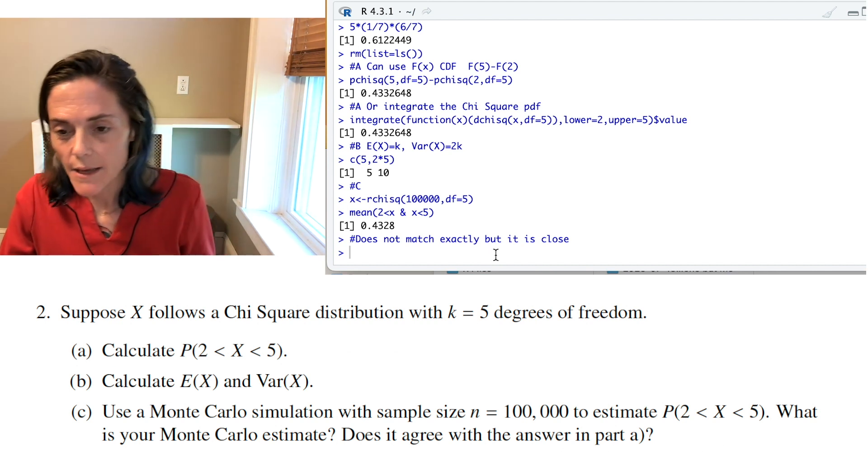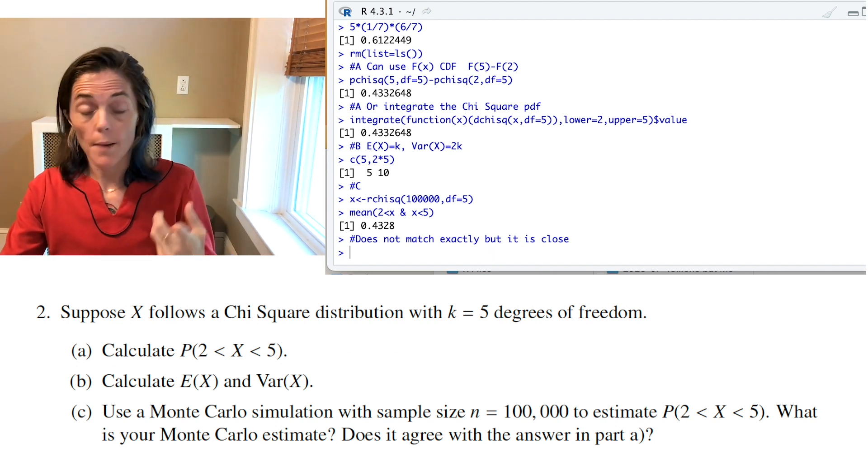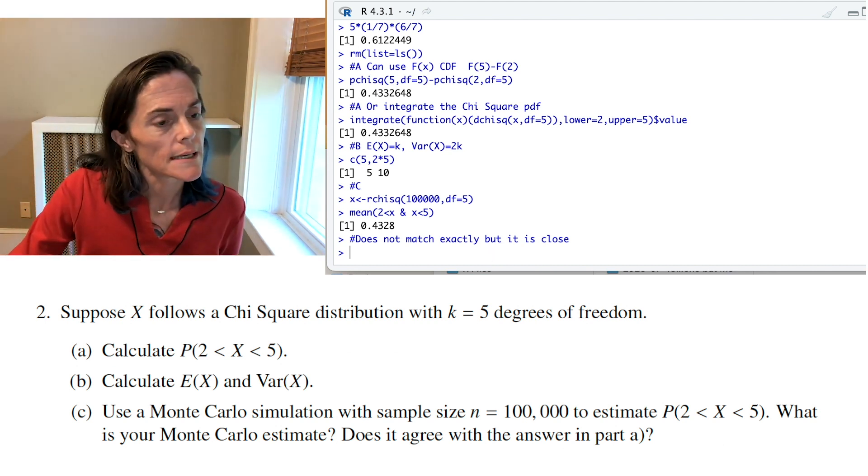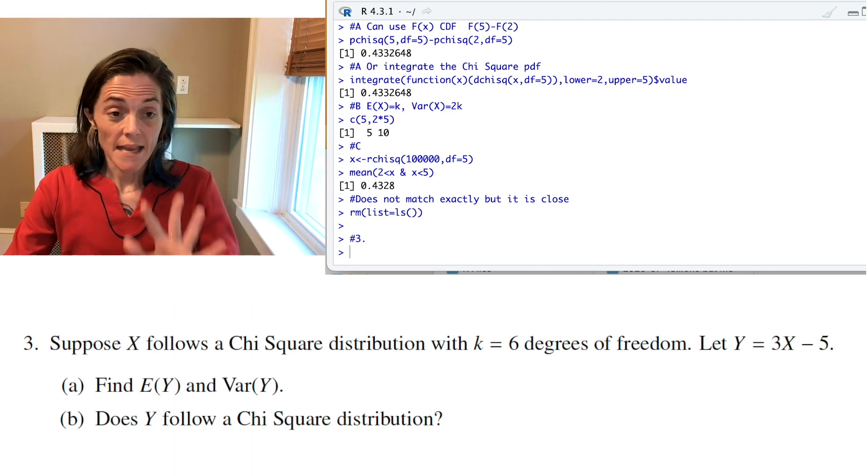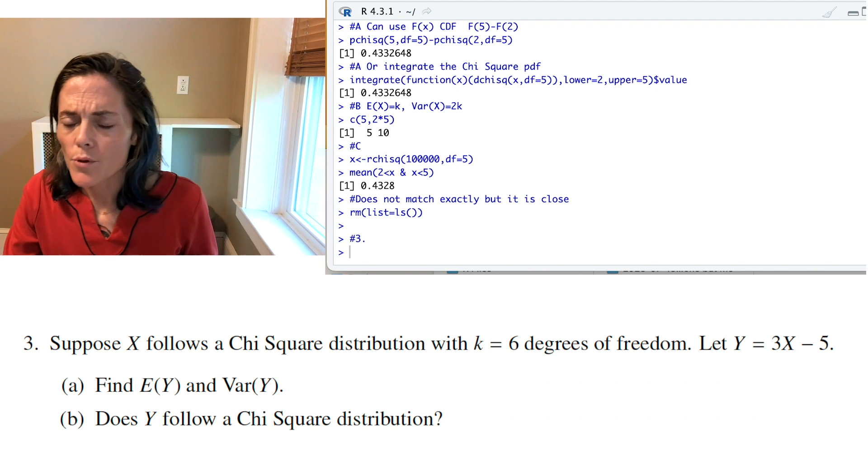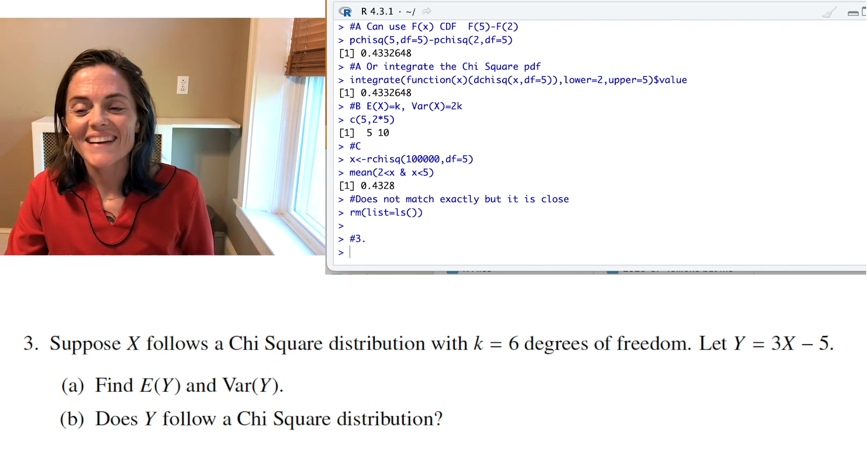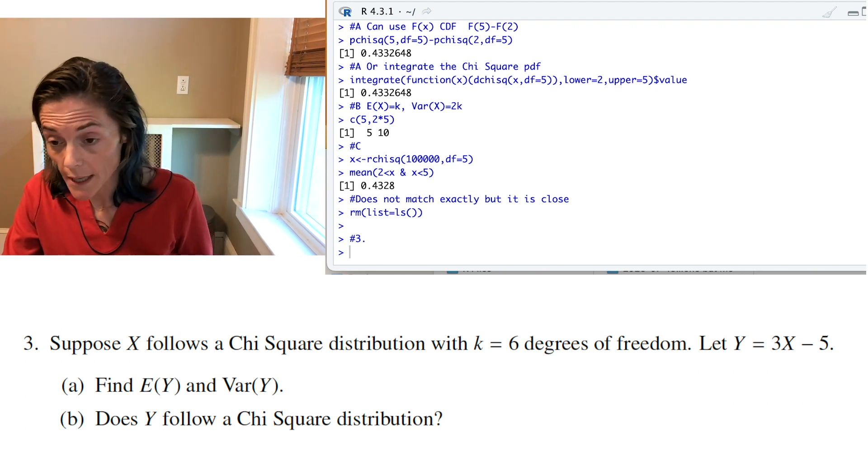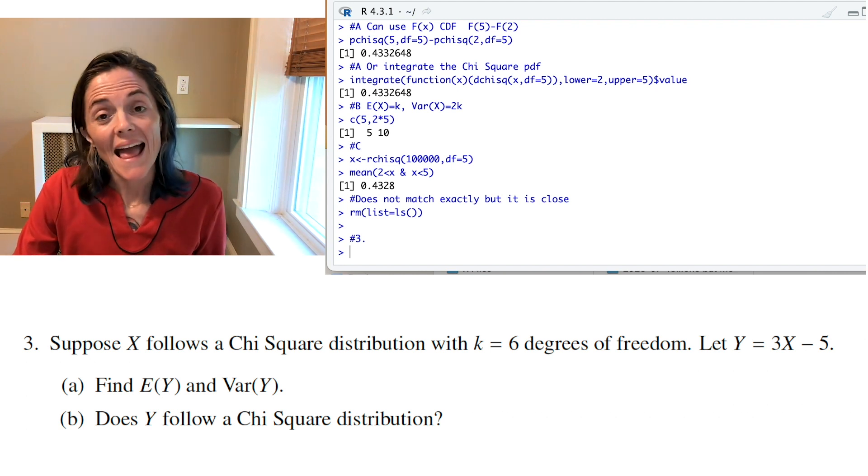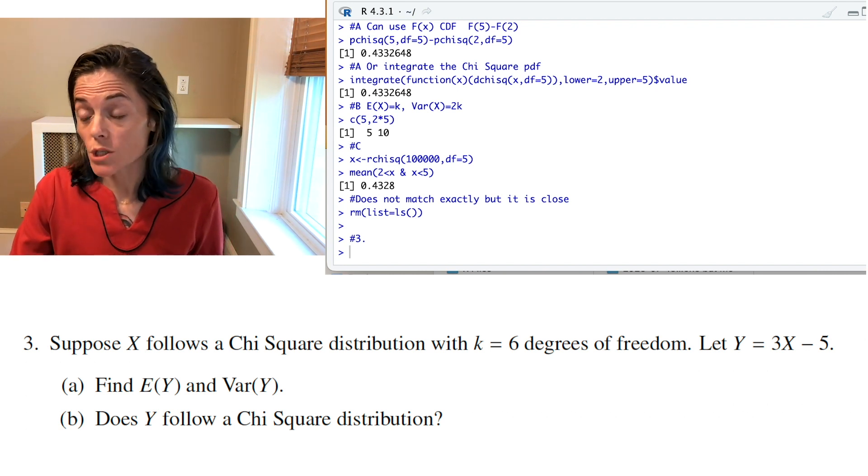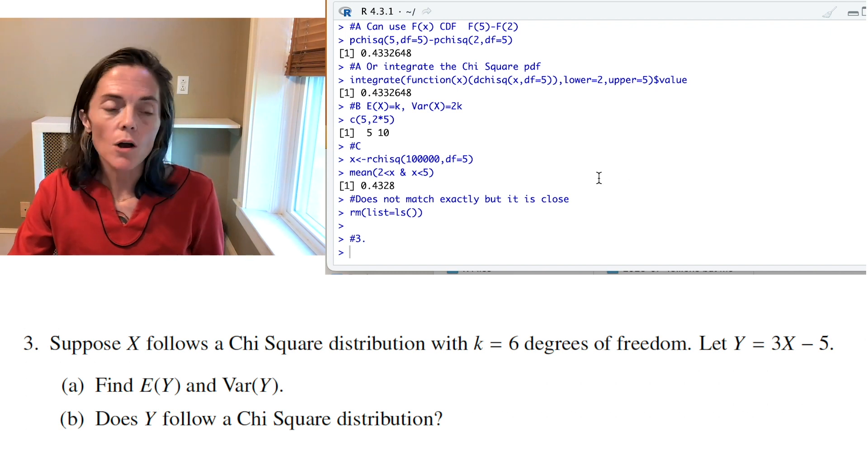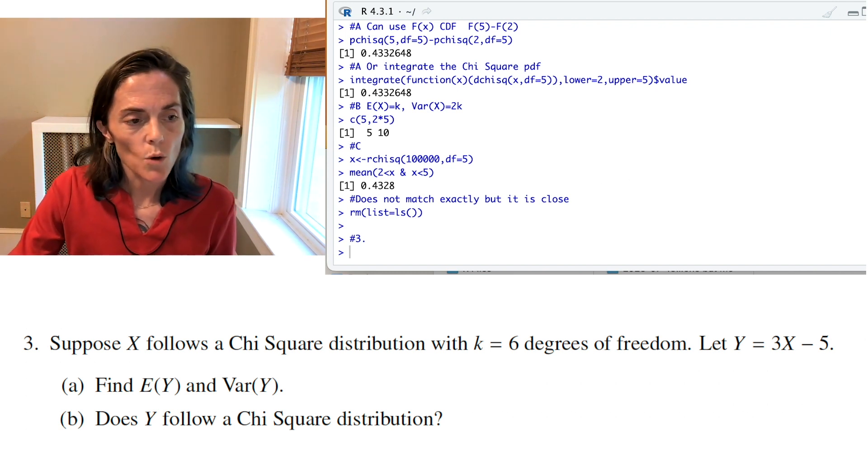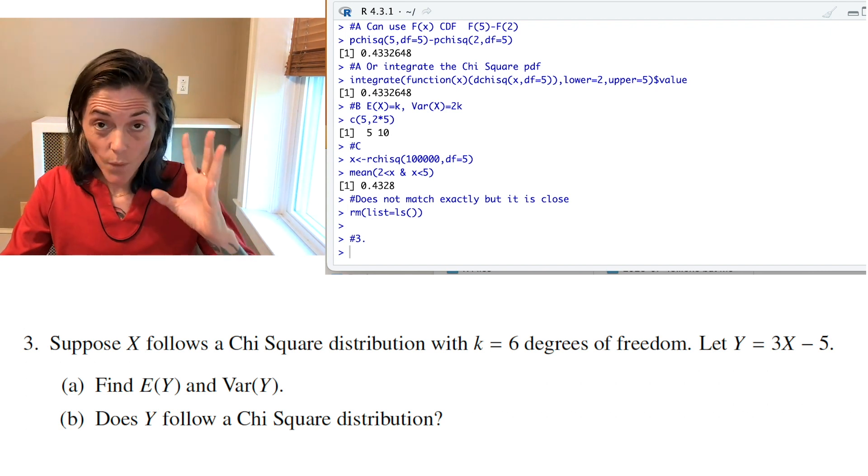Okay, let's see. That's the end of question number 2. So, we can clear our variables and begin with number 3. Once again, we have a chi-square distribution. Here we have 6 degrees of freedom. And then, Y is a linear transformation of this random variable. Well, I'll go ahead and do this in R. So, what do we know for a chi-square?